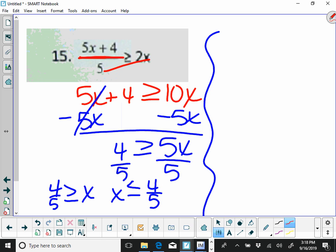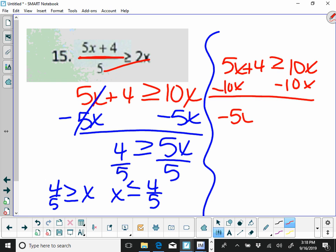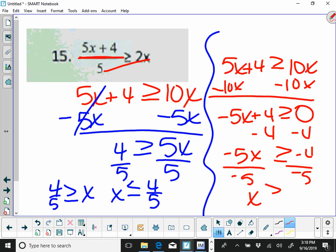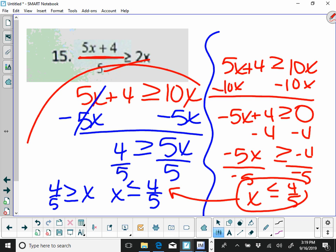So had we started here and gone the other way that we're used to, we would have moved the 10x, that would give you 0 on this side. Then you would have to move the 4 and divide by negative 5, and warning, warning, you would have to flip your sign, which ultimately gives you the same answer. It's just a few more steps. So I'm actually a fan of method number 1 on that situation.